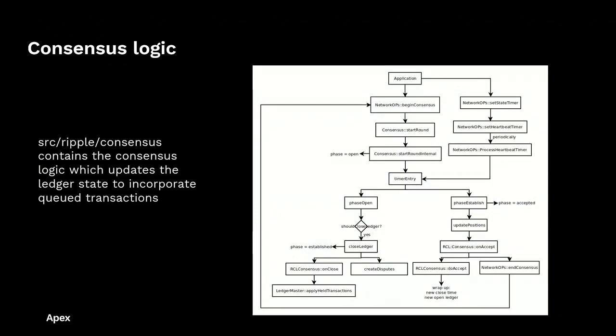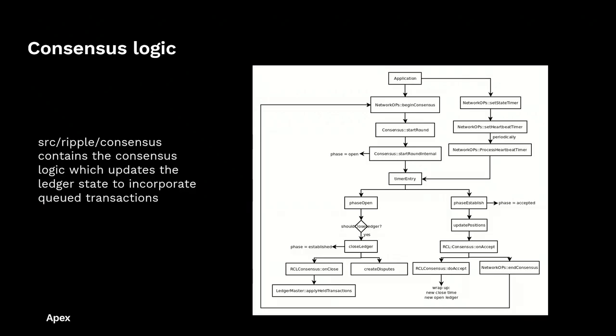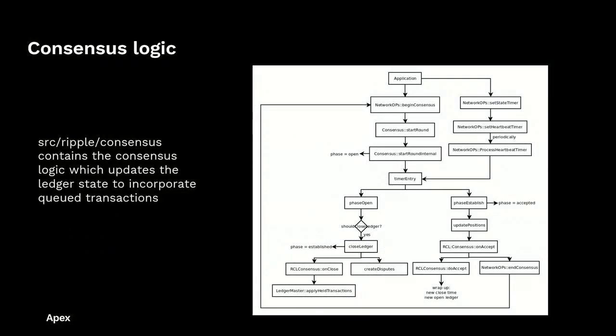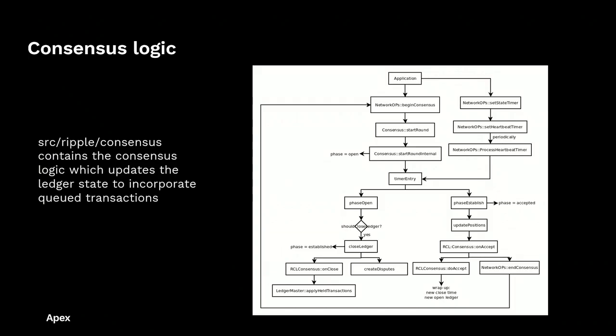Exploring consensus further, we see the logic flow of the operations. Application launches, begin consensus calls out to that method, and also launches an asynchronous timer which is used to periodically jump into the application at various points in time. Begin consensus sets the phase to open. When the timer is invoked we check the phase — if we're in the open phase and it's now time to close the ledger, we set the phase to establish and apply health transactions. Once again when the timer is invoked, when we're in the established phase we update our positions and the positions of other nodes on the network, set the next ledger close time, and rinse and repeat.